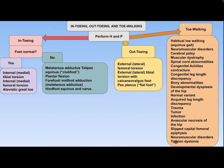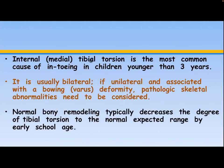Internal or medial tibial torsion is the most common cause of in-toeing in children younger than 3 years. It is usually bilateral. If unilateral and associated with bowing or varus deformity, pathologic skeletal abnormalities need to be considered. Normal bony remodeling typically decreases the degree of tibial torsion to the normal expected range by early school age.